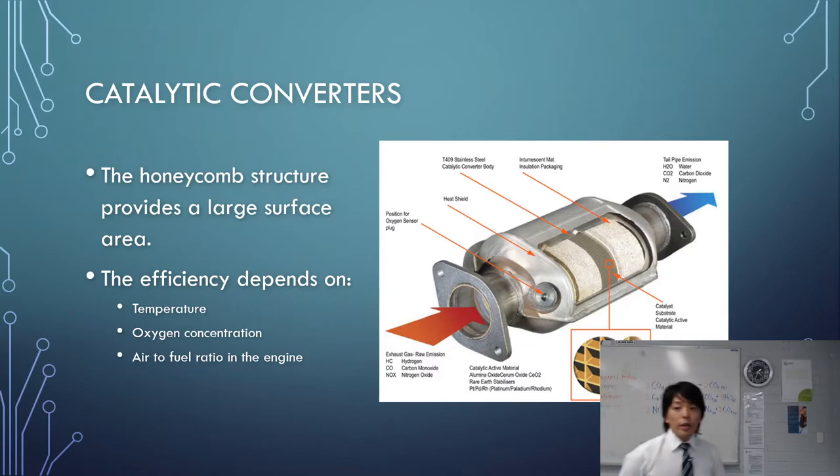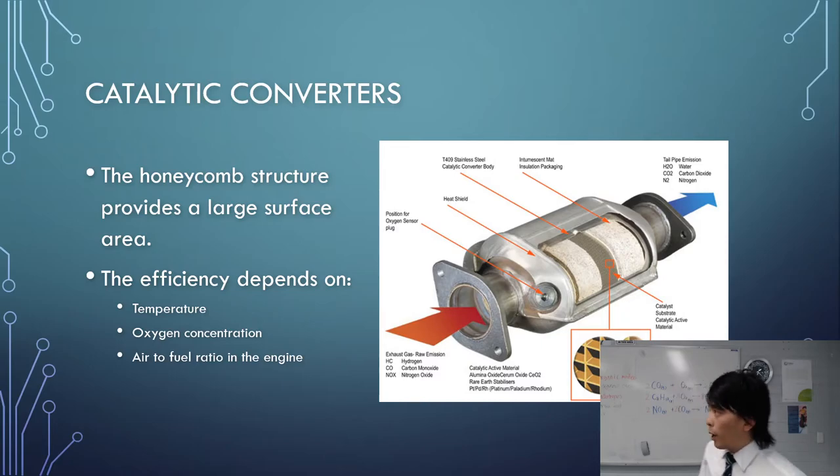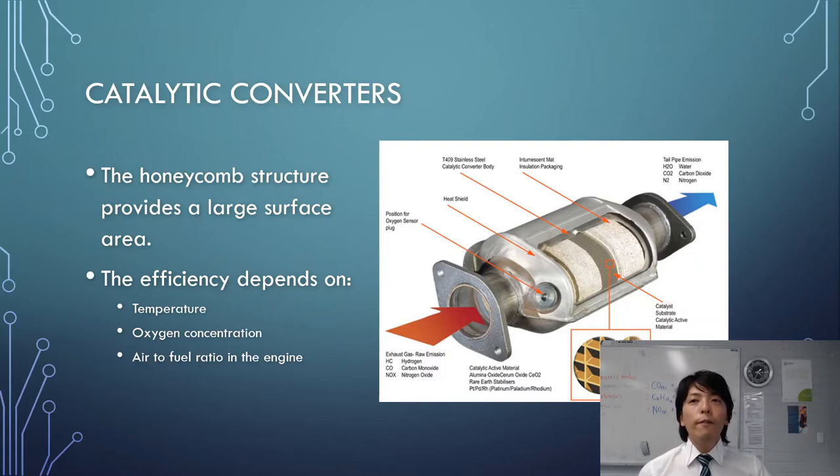Now, a few notes are there as well on the next slide. The efficiency depends on the temperature. If you just started the engine and if it didn't warm up enough and started driving, the efficiency of catalytic converter will drop. Meaning you would still be releasing nitric oxide, carbon monoxide and unburnt hydrocarbon to the atmosphere. It also depends on oxygen concentration. So at high altitude or if you're not driving fast enough, if you're just idling, you are not sending air into the car.